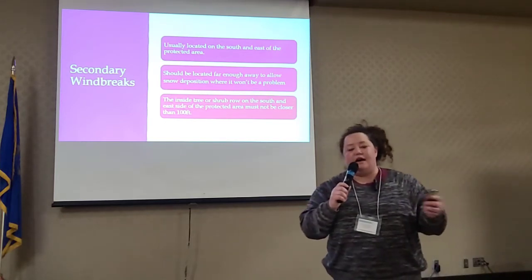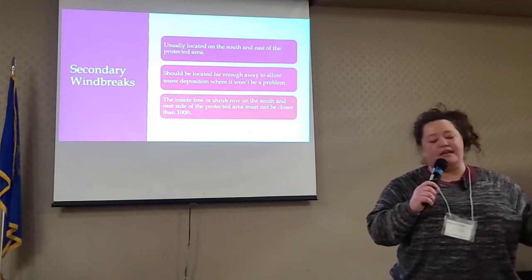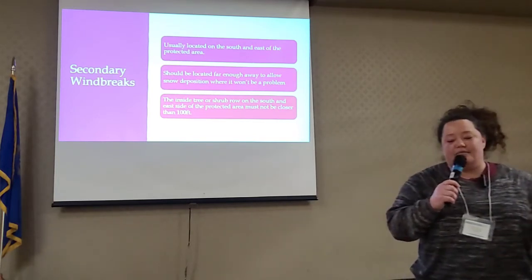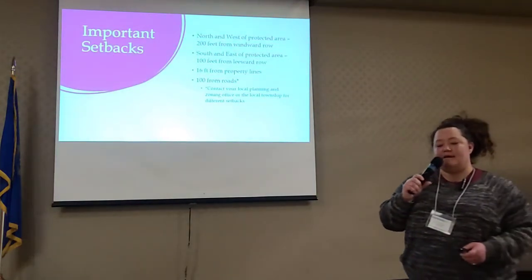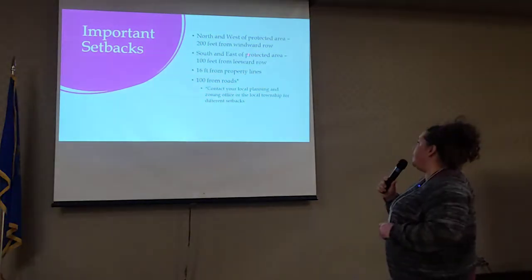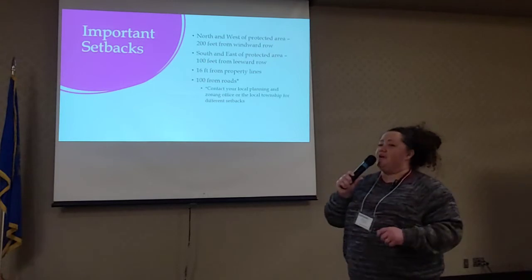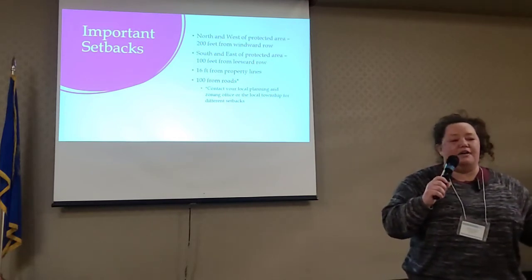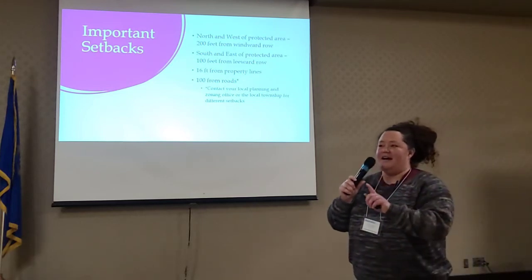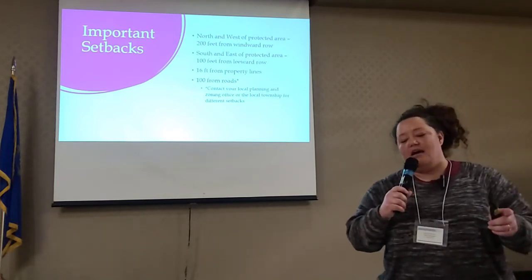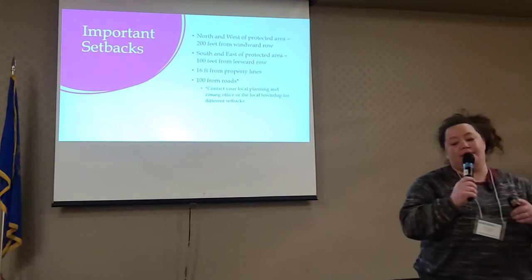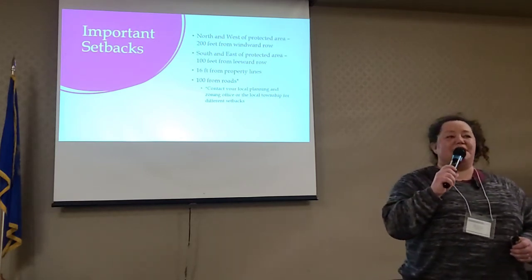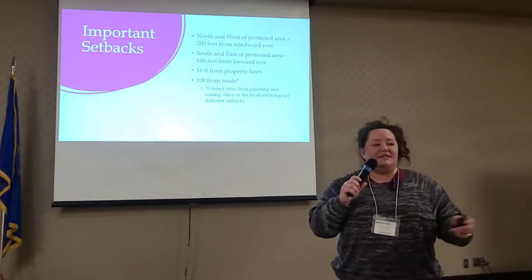Secondary windbreaks — this is usually on the south and on the east side. These need to be far enough away so that you're not piling snow for a driveway or service roads. Again, 100 feet is usually the general rule of thumb. Important setbacks: 200 feet on the north and the west side, 100 feet from the south and east side. You want to stay 16 feet off of property lines — this is very important so you don't get in trouble with your neighbors — and then 100 feet off of any roads. But there are some contradictions to this at times. Depending on your county planning and zoning committee, they may have different setbacks, and your local townships themselves might also have different setbacks. So it would be a good idea to become friends with these people and at least know what setbacks are required.